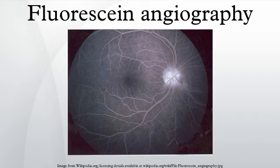Fluorescein angiography does not involve the use of ionizing radiation. Regarding equipment: the exciter filter allows only blue light to illuminate the retina. Depending on the specific filter, the excitation wavelength hitting the retina will be between 465 to 419 nanometers.